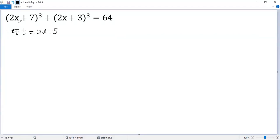So the first base becomes t plus 2, the second t minus 2. So the given equation would be (t+2)³ + (t-2)³ = 64.